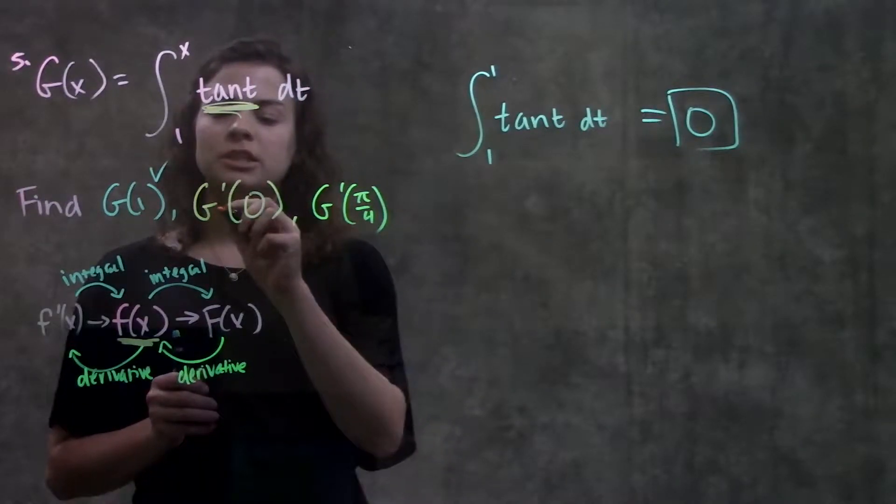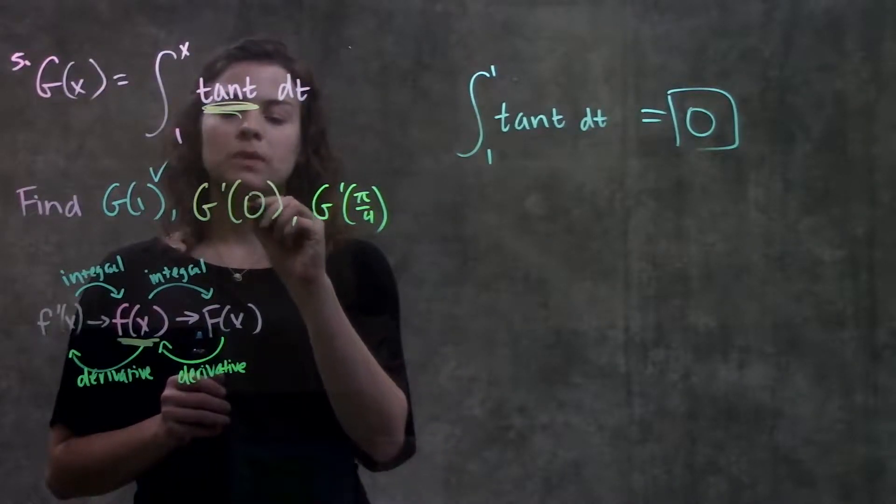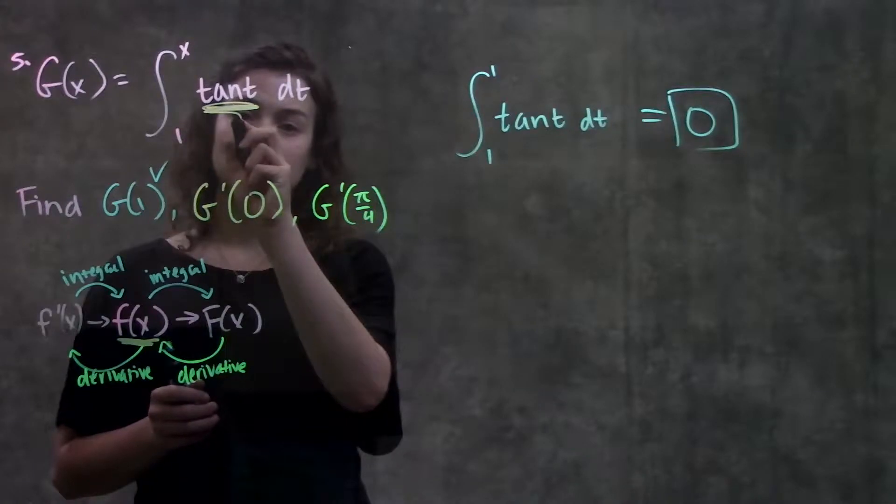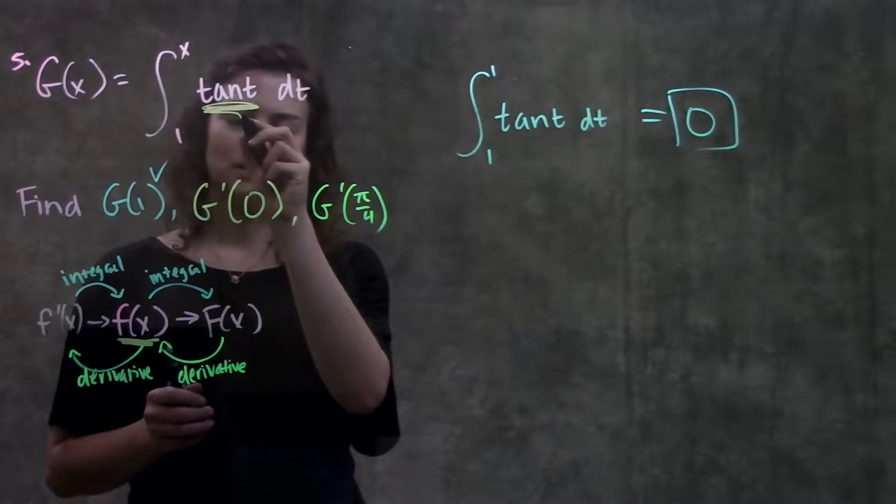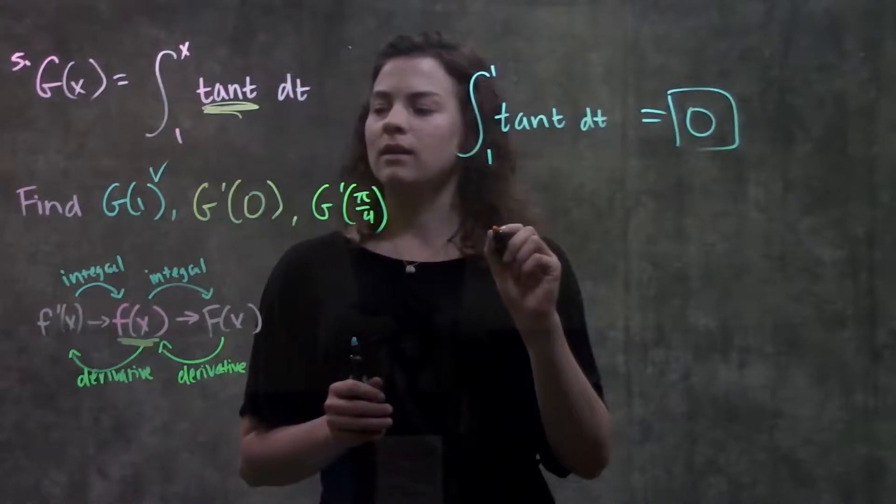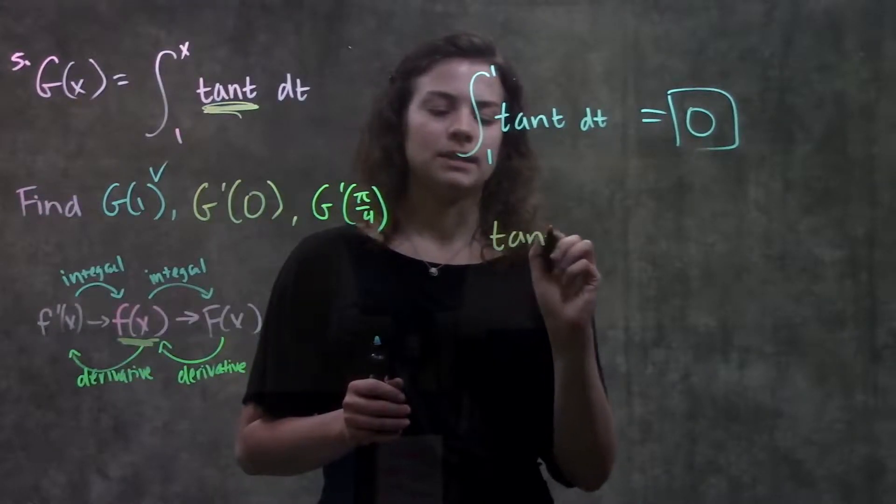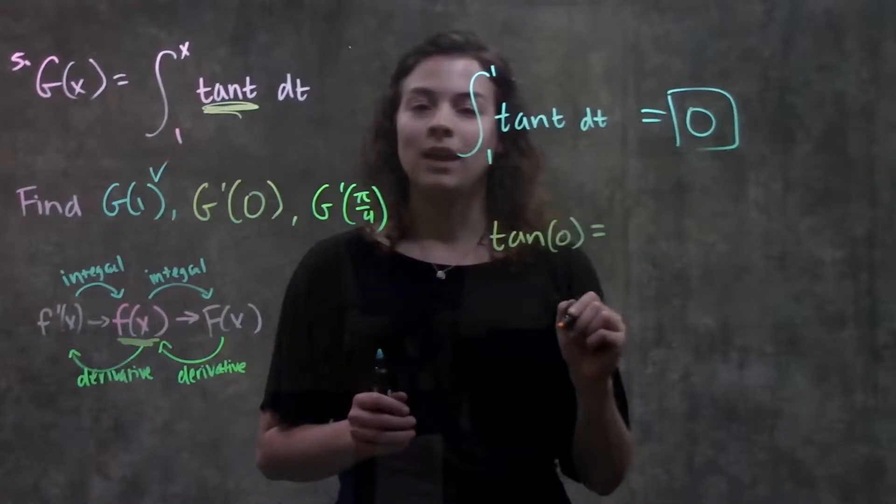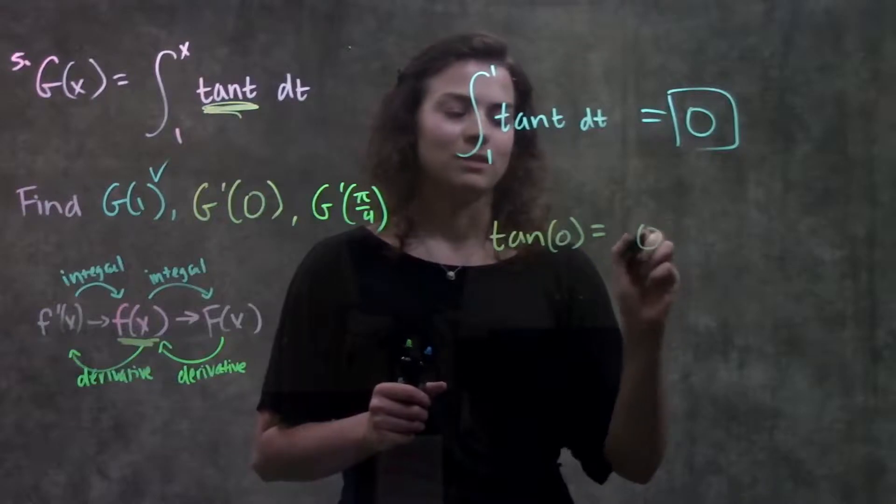So when it's asking for big g prime of 0, we can just plug this value into this function in the middle here, our original function. So going over here, when we plug in 0 into tangent, we get tangent of 0, and that's just equal to 0.